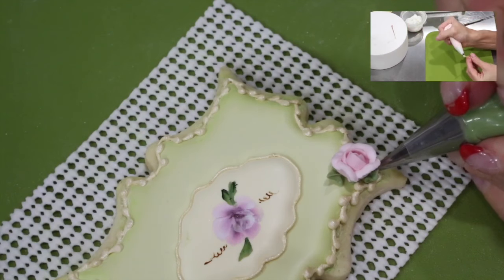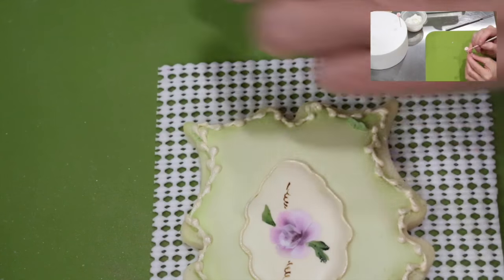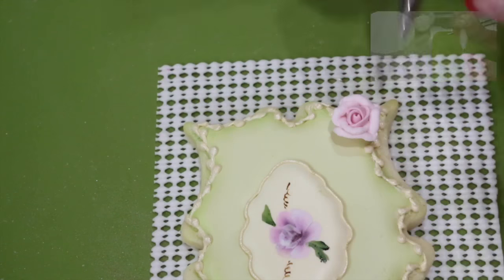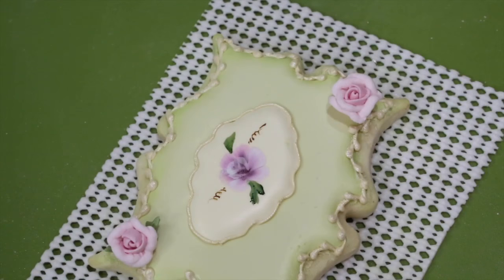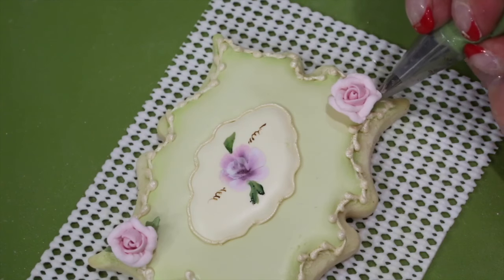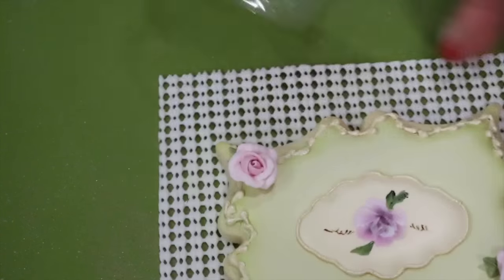To attach the roses to the corners of the cookie, you just want to add a little mound of green icing using a small leaf nozzle and even pressure. Go ahead and pipe two leaves on either side of your rose. Release the pressure as you get to the top of the leaf.